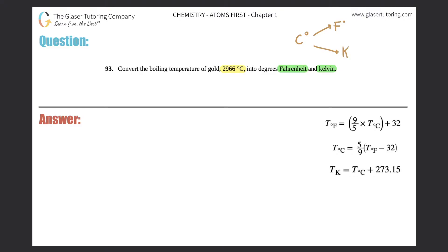Just know that Fahrenheit will always be on the left-hand side, and you can go back and forth from Fahrenheit to Celsius and then to Kelvin. Basically, Celsius is the leading unit — the bridge to go between Fahrenheit and Kelvin — so we're going to use two equations.